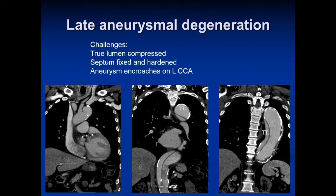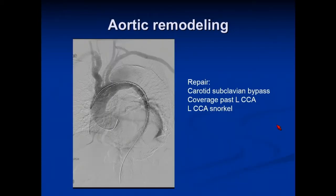Here's a typical patient with late aneurysmal degeneration from a Type B dissection. You can see the dissection encroaches quite close to the left subclavian artery, the false lumen becomes quite large, and the true lumen is quite small. These patients can be very tricky to manage. In this case, the patient had a carotid-subclavian bypass; we ended up snorkeling into the aortic arch and covering up to the level of the innominate artery.